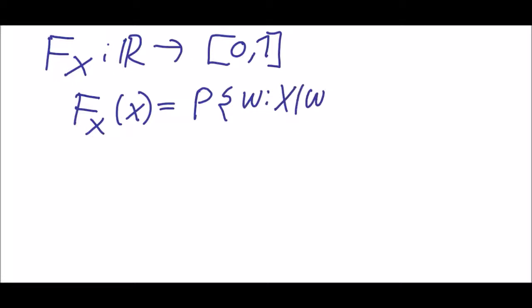This is P that X of omega is less or equal to x and we will just write it in that way that it's P that X of omega is less or equal to x.